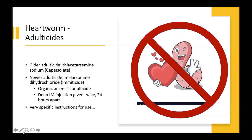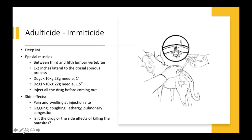Immiticide has really specific instructions for use. You're using it on a dog that is heartworm positive — they have adult heartworms in the right side of their heart. It's given deep intramuscularly; the company specifically recommends the epaxial muscles — the big thick tube of muscles surrounding the spine — between the third and fifth lumbar vertebrae, one to two inches lateral to the dorsal spinous process. For dogs less than 10 kilos, use a 23-gauge one-inch needle; for dogs greater than 10 kilos, a 22-gauge one-and-a-half-inch needle. Inject all the drug before removing the needle.